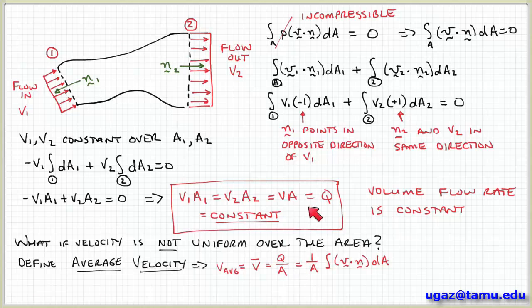So the relationship still holds if the velocity is not uniform, but instead of this constant velocity, we use the average velocity calculated using the mathematical definition of an average.